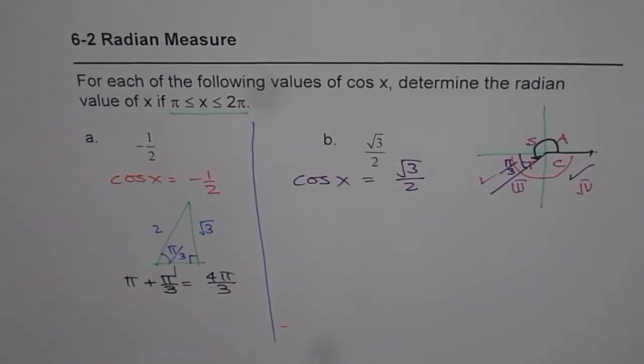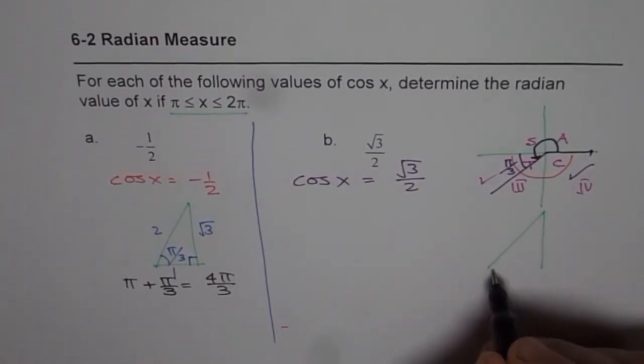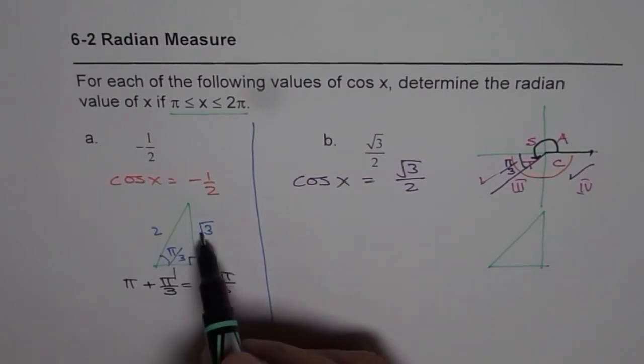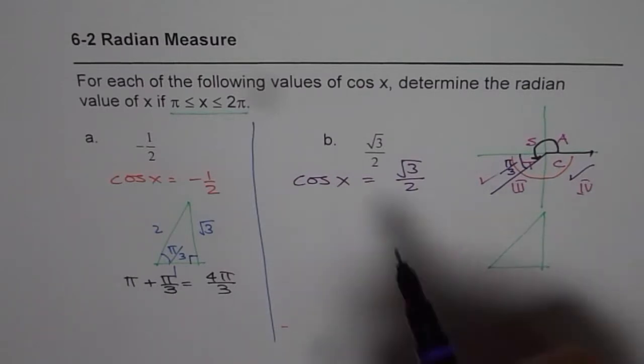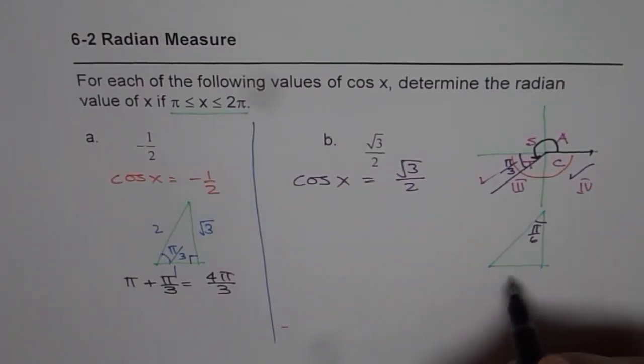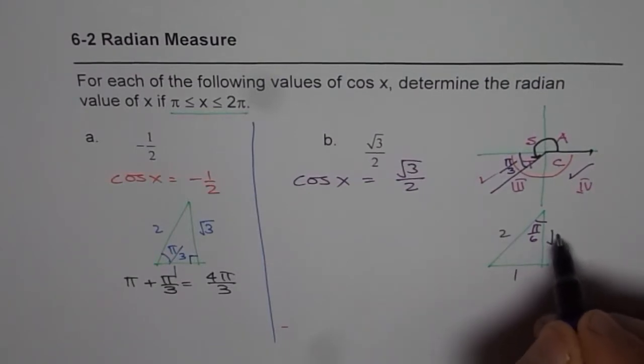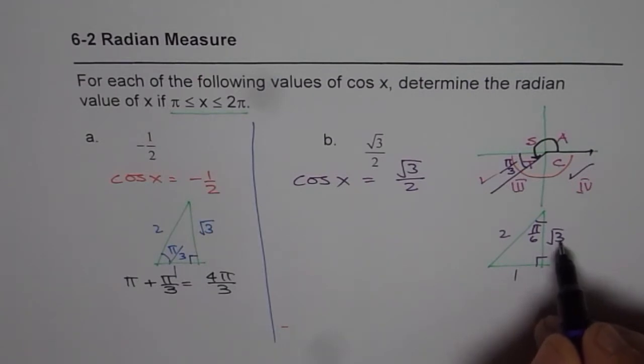Now in quadrant 4, what is the acute angle? You can again draw the special triangle. The same special triangle can work. When you say cos x is √3/2, your special triangle has 1, 2, √3.